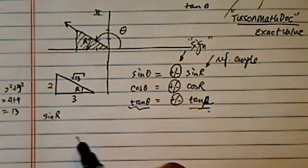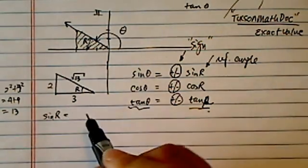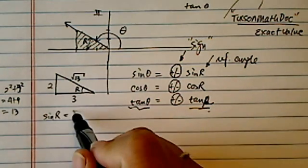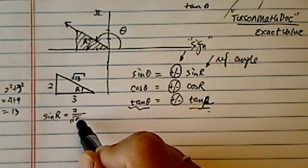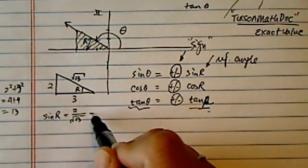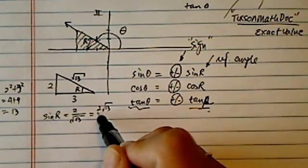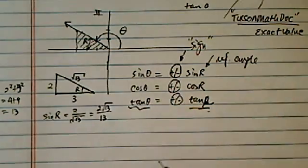Let's do the easy part first. I don't know about you, but the easy part is always more appealing. So sine r is 2 over radical 13, and I'm going to rationalize it by multiplying radical 13 top and the bottom.